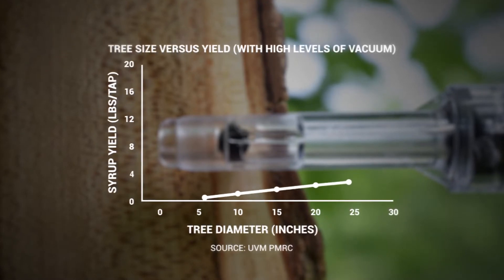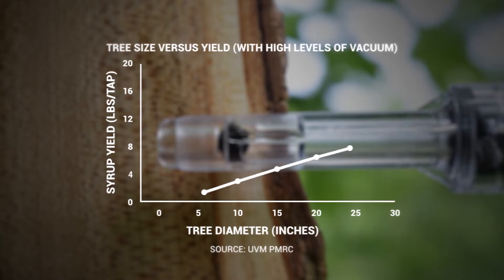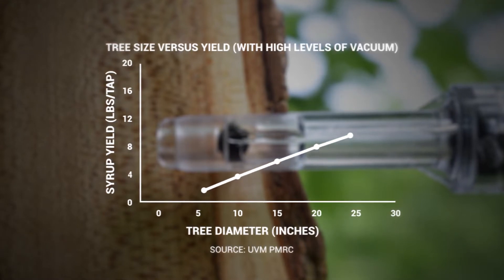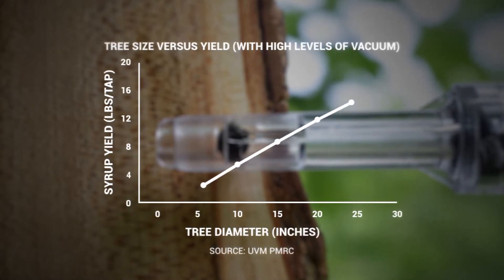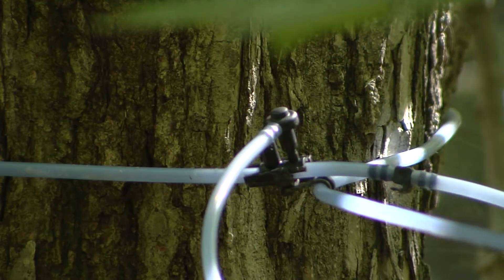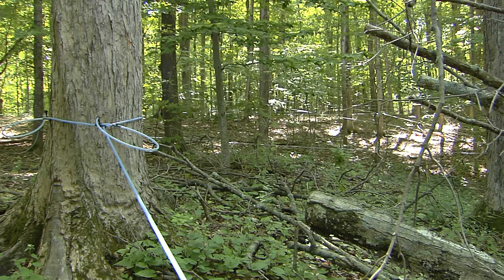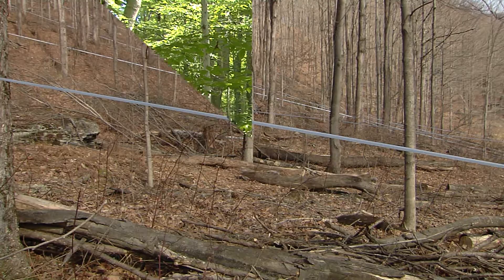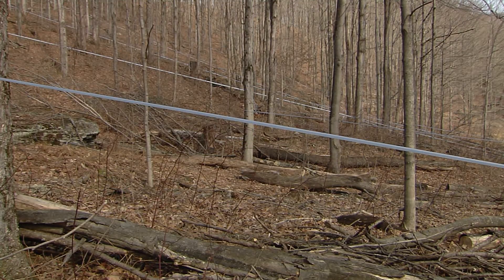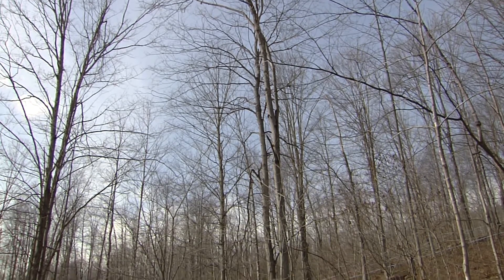Although there's a lot of variation, total yields increase by about a half pound of syrup equivalent for each inch increase in diameter. Keeping this relationship in mind can help better evaluate the potential yields of a particular stand or sugarbush. The annual yields from two different properties with a thousand taps could be really different depending on the average size of the trees.